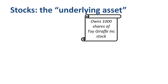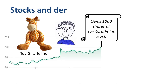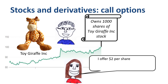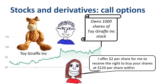An example of a derivative is a call option. John is approached by Jane, his stockbroker, with an offer. She offers $2 per share for her to receive the right to buy John's shares at $120 per share within six months. If John and Jane agree on that transaction, then they have just entered into a derivative contract. The value of the call option depends on — is derived from — the value of the shares during the next six months.